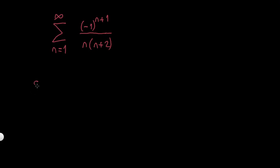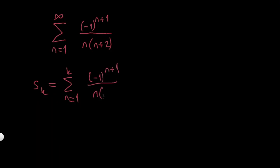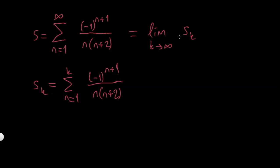In general when we have a series, we define a partial sum sequence called Sn or Sk. Instead of adding infinitely many terms like in a series, we just add up to k — so we are adding just the first k terms. If this sum is convergent, so if the limit equals s, I know this is going to be equal to the limit as k goes to infinity of Sk. So if I can find a general rule for Sk and take a limit of it, this will equal my answer. So I'm looking for s.